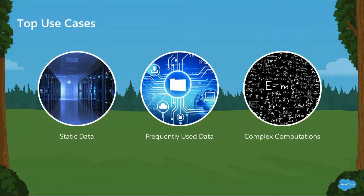Let's go over some top use cases — what kind of data should you be storing with Platform Cache? First would be static data. A good example would be the daily exchange rate: maybe your account reps need to work with different countries and accounts, and if you store that every day, everybody in your org will be using it frequently. A bad example would be trying to keep track of a stock price, since that information changes every second — by the time you access it again at 12:05 or 12:10, it would be invalid, resulting in a cache miss.